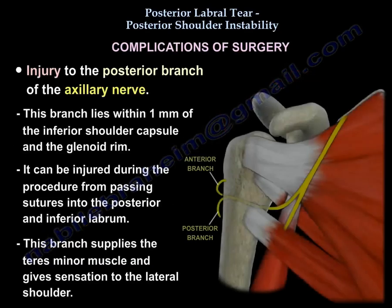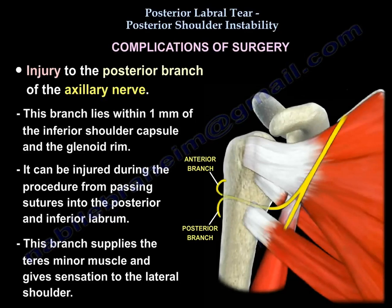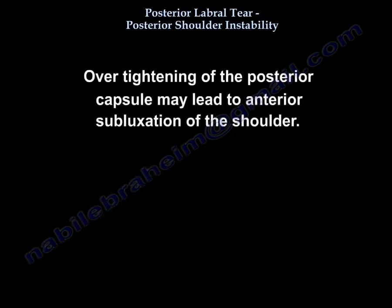Complications of surgery include injury to the posterior branch of the axillary nerve. This branch lies within 1 mm of the inferior shoulder capsule and the glenoid rim. It can be injured during the procedure from passing sutures into the posterior inferior labrum. This branch supplies the teres minor muscle and gives sensation to the lateral shoulder. Over-tightening of the posterior capsule may lead to anterior subluxation of the shoulder.